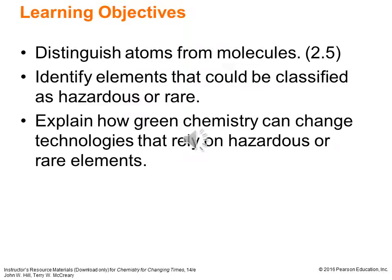Finally, we'll be able to distinguish between atoms and molecules, identify elements that could be classified as hazardous or rare, and explain how green chemistry can change technologies that rely on hazardous or rare elements. We talked a little bit about green chemistry back in Chapter 1, and it's certainly a direction we're going to continue to move here as we talk about atoms in Chapter 2.